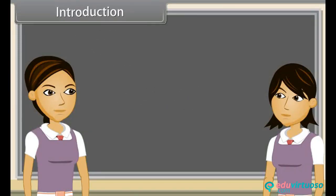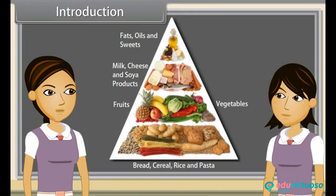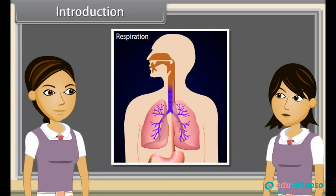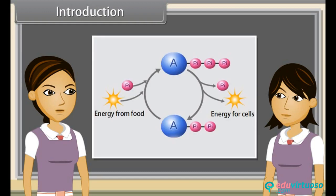As we have discussed earlier, every living organism takes in food material by the process of nutrition, which provides energy for various life processes. Respiration is an oxidative process involving the oxidation of food substances such as carbohydrates, fats and proteins within the tissues to form CO2, water, and consequent release of energy. The released energy is temporarily stored as ATP.